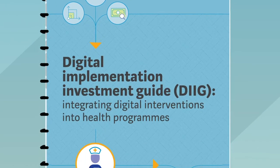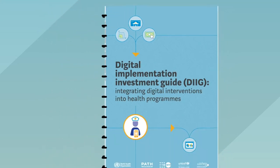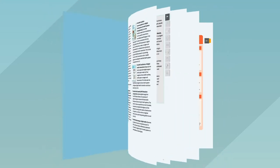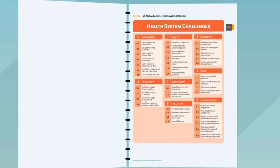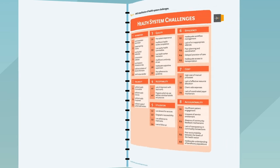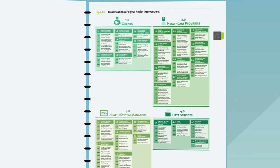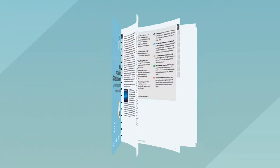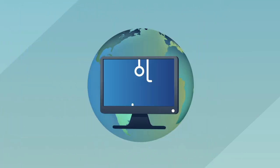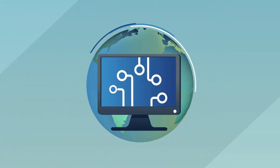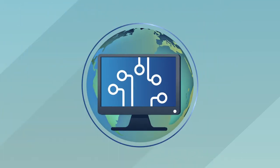The WHO Classification Framework in the Digital Implementation Investment Guide has identified 39 potential health system challenges and over 80 specific ways that digital tools can improve health services. These interventions are parceled in a variety of digital health global goods.